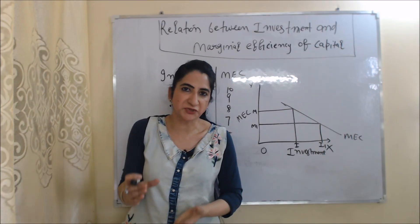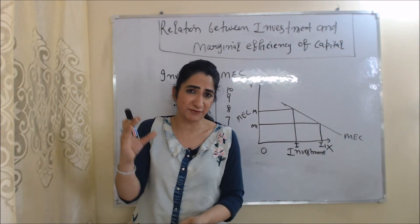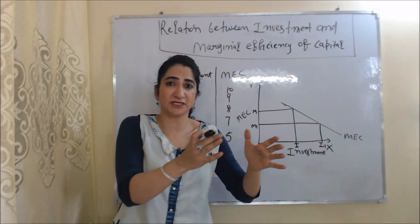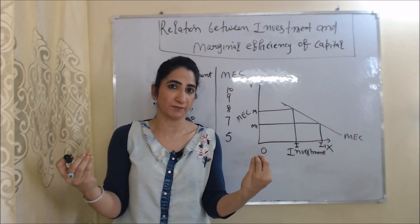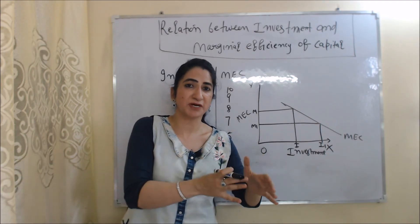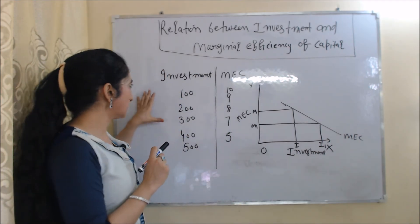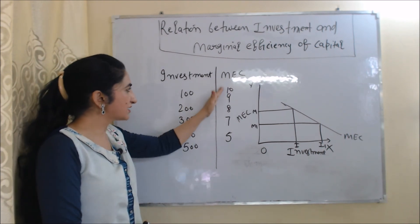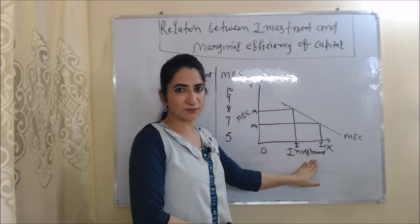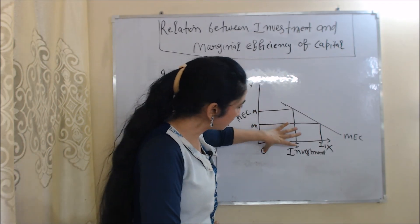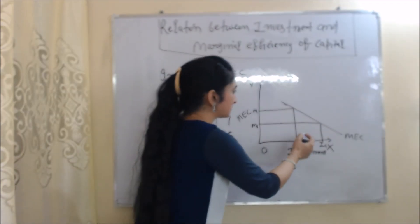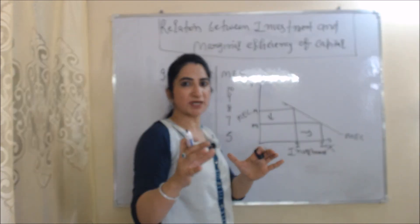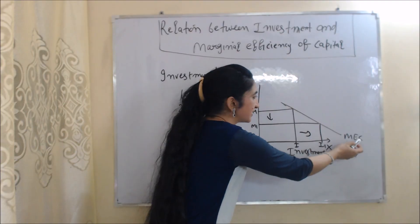Now we will see the relation between investment and marginal efficiency of capital. Investment and MEC have an inverse relation: if we continue investing in one type of project, after a certain time period our profit will fall and MEC will fall, due to the law of diminishing returns. In the diagram, the X-axis shows investment and the Y-axis shows MEC. When investment is OI, MEC is OM; as investment increases from OI to OI1, MEC falls from OM to OM1. This is the MEC curve.